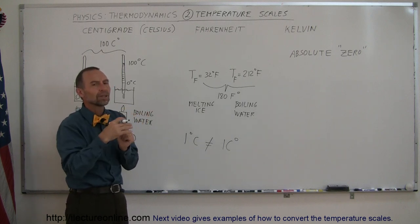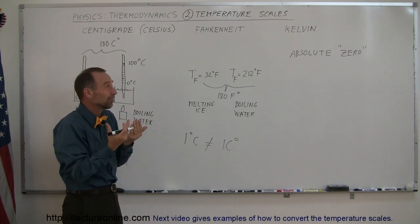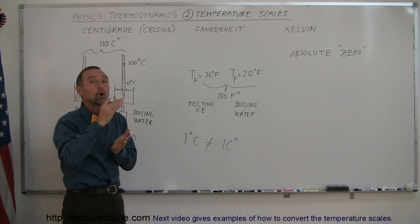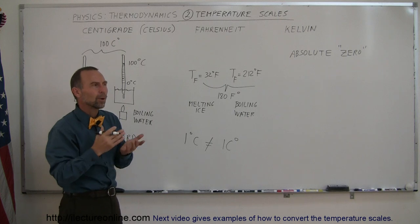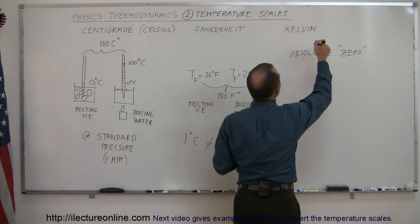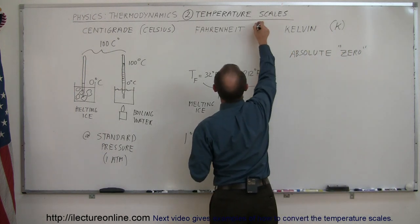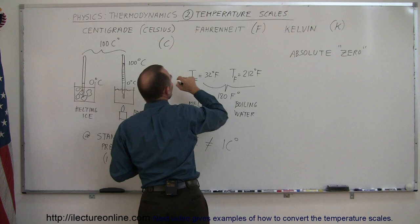The only movement they have then is quantum mechanic movement, and we're not going to get into that detail. For our purpose, we can simply say, when all motion in the object stops, that object will be as cold as it can possibly get, that's absolute zero. In Kelvin degrees, we use the symbol K. In Fahrenheit degrees, we use the symbol F. And in Celsius degrees, we use the symbol C.